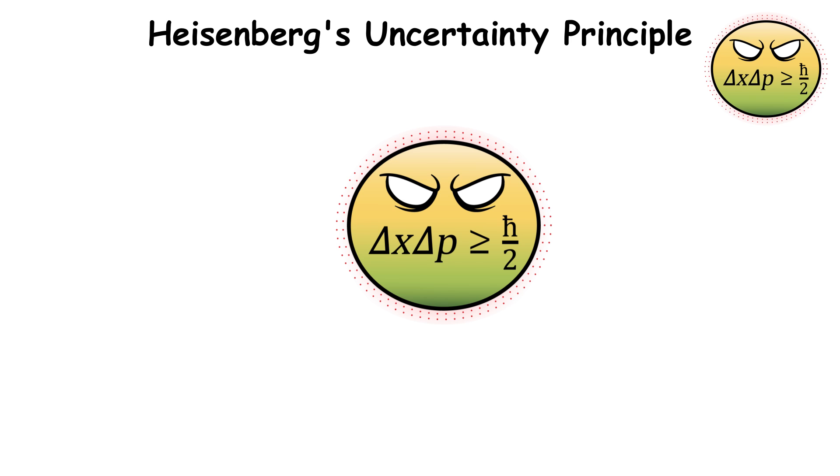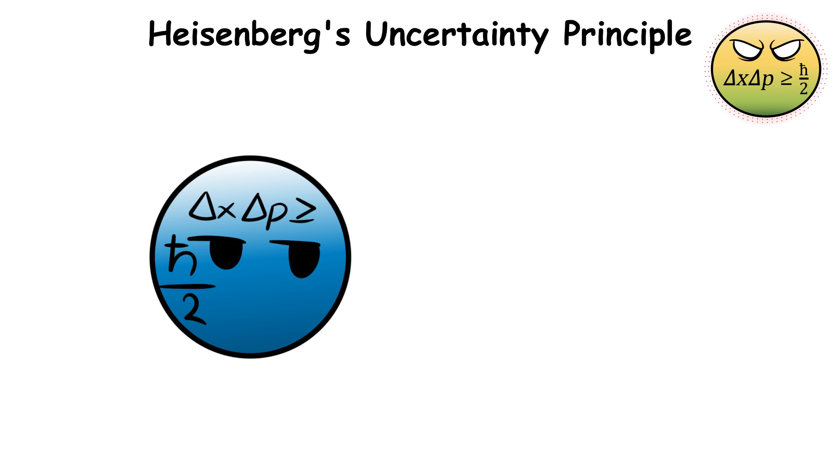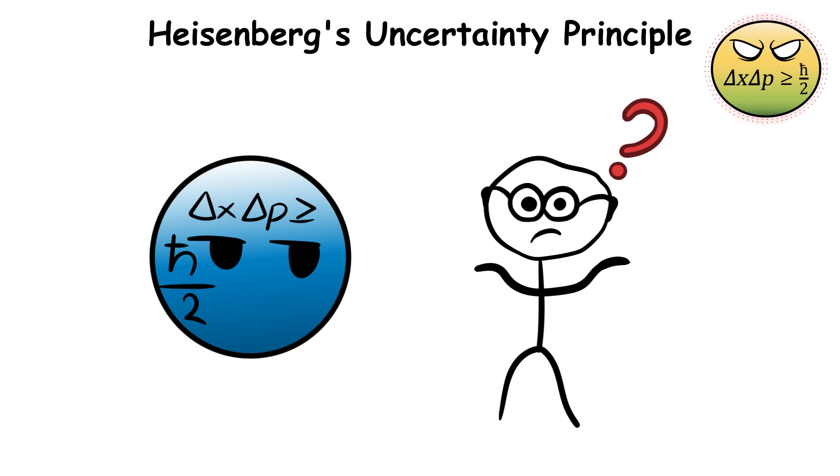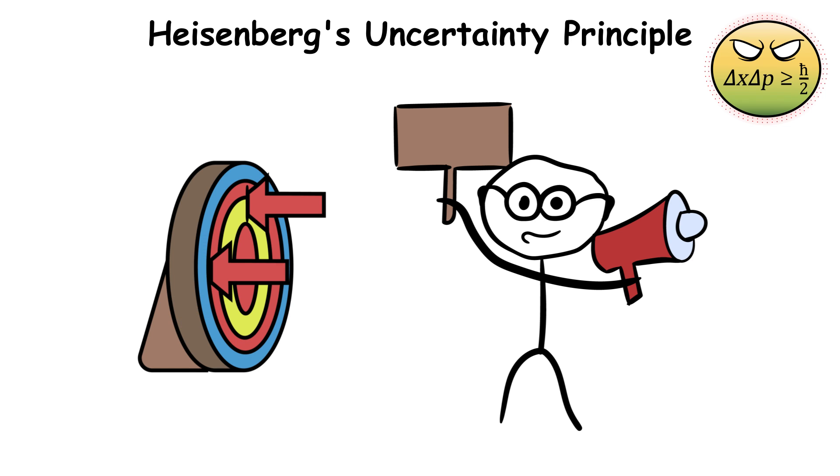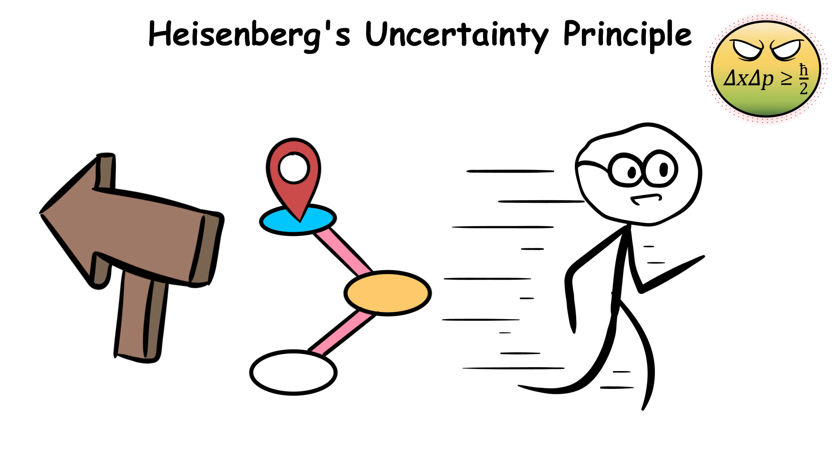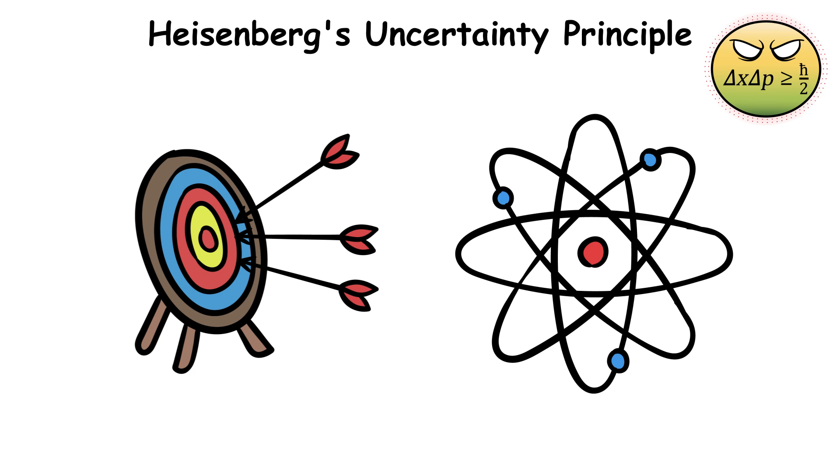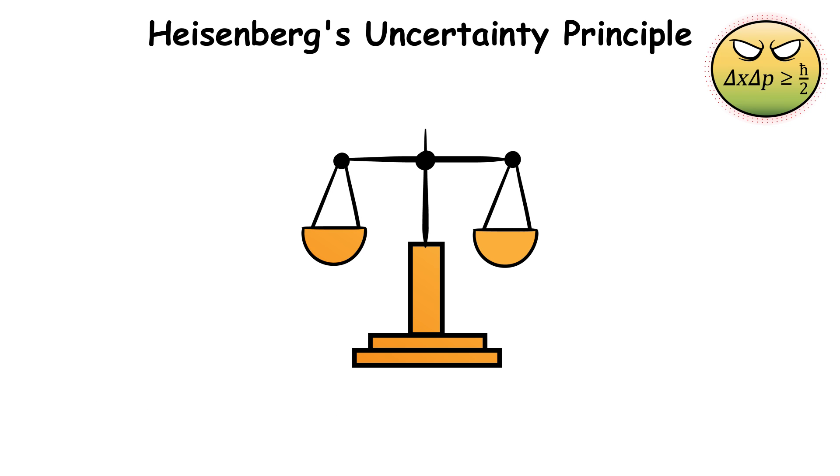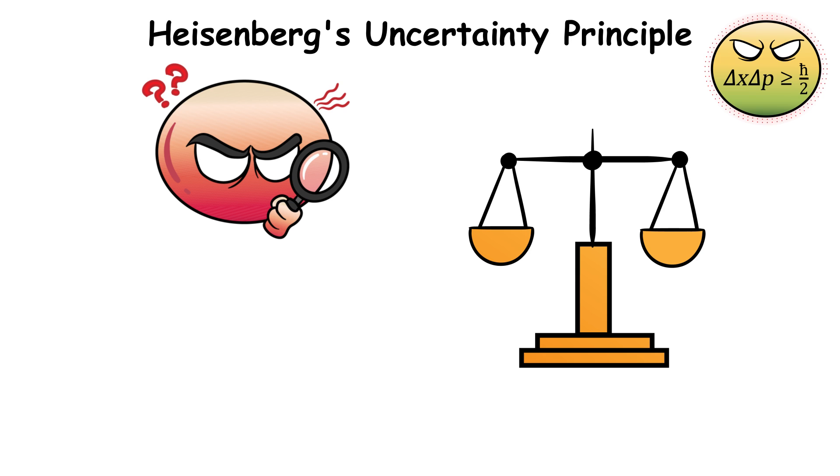Heisenberg's uncertainty principle operates in the same way. Heisenberg's uncertainty principle states that it is impossible to simultaneously and precisely know the position, speed, and direction of a quantum particle due to the limitations in measurement accuracy. This principle is like a balancing act. It's rooted in the observer effect, which states that observing an object will change its behavior.